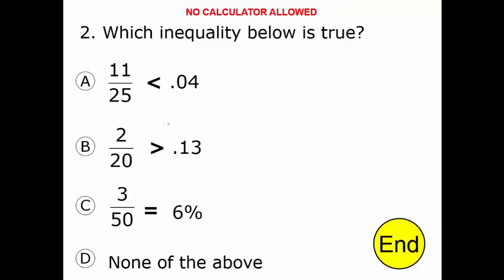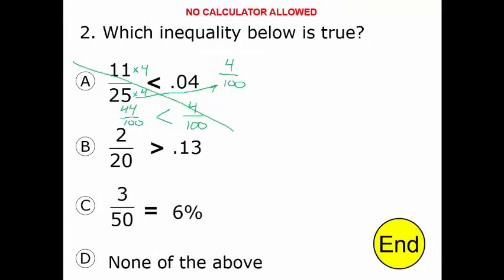Looking at the three different statements, we need to find out which one is true. In order to do that, we have to get these to equal or equivalent fractions — they need to both be fractions and have the same denominator. To turn 0.04 into a fraction, it really is saying 4 over 100. So I'm going to put that 4 over 100 right down here. To turn 11/25 into something with the same denominator, we multiply the top and bottom by 4, giving us 44 over 100. Reading that statement: 44 hundredths is less than 4 hundredths — clearly that is not true. So A is out.